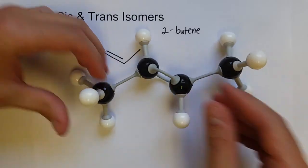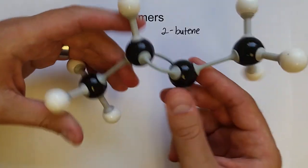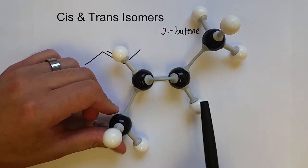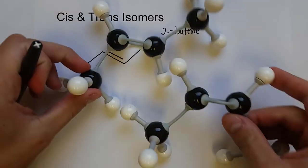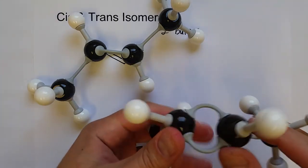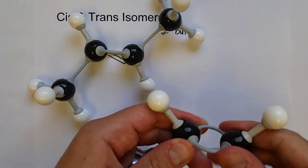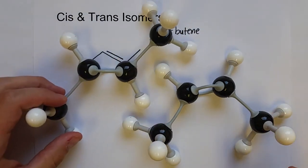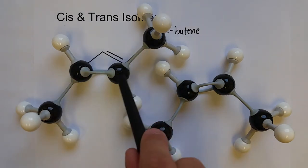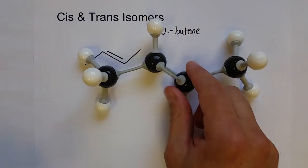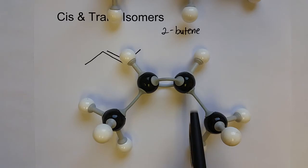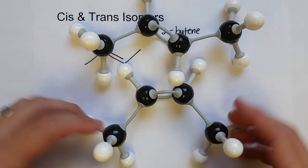Because of this, two different isomers can set up with the same molecule. We could have hydrogen atoms on different sides of the double bond, or we could have them on the same side. We still have 2-butene in both cases, but the hydrogens are arranged differently — and since the bond can't rotate, these are genuinely distinct structures with very different shapes.